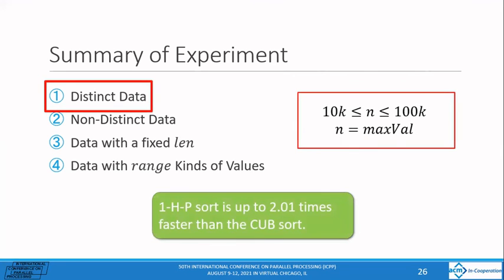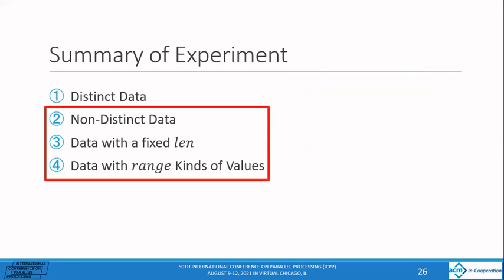To summarize the experimental results, for distinct data, one HP-sort was the most effective data set, up to 2.01 times faster than cub-sort. For the later three data sets, HP-sort and zero-compressed HP-sort were effective.